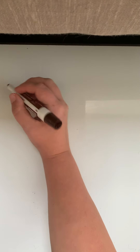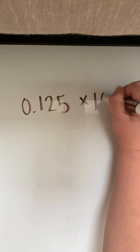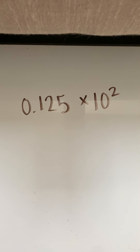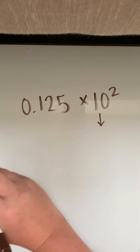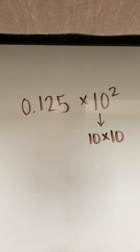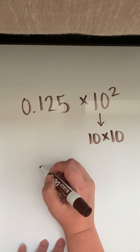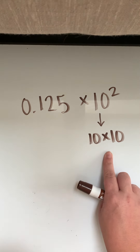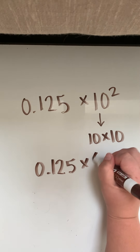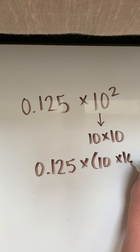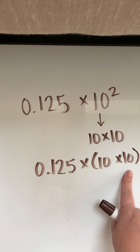Let's write 0.125 times 10 to the second power. Now I want to remind you that to evaluate this expression, you first need to rewrite 10 to the second power as 10 times 10 before you do anything else. Now from PEMDAS — order of operations — whenever something is in parentheses, we've got to do it first.